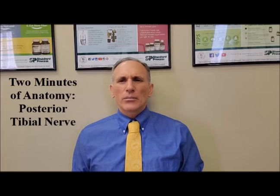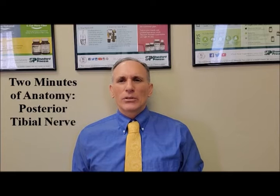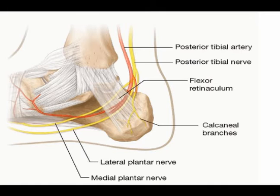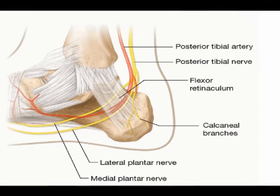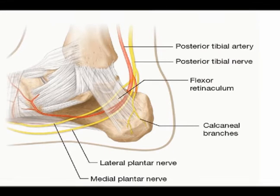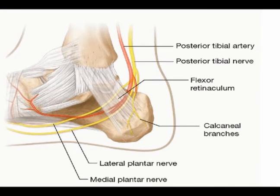The posterior tibial nerve is the distal end — it is a continuation of the tibial nerve and is not its own structure. It is called the posterior tibial nerve due to its clinical significance.